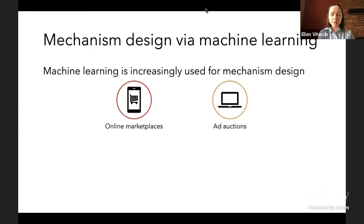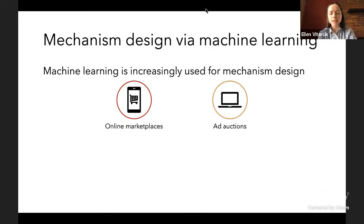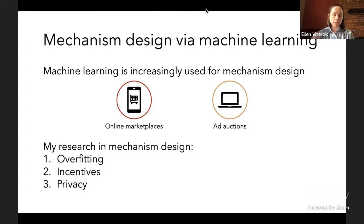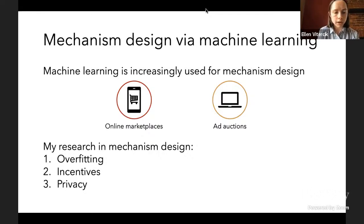Machine learning is becoming increasingly important in the context of mechanism design, with many high-impact applications like pricing in online marketplaces and designing ad auctions. In this talk, I'm going to give a brief overview of my research in mechanism design in three areas: overfitting, incentives, and privacy. I'll start off with overfitting.